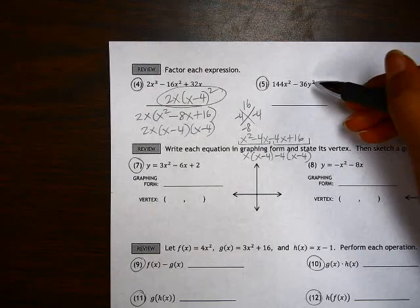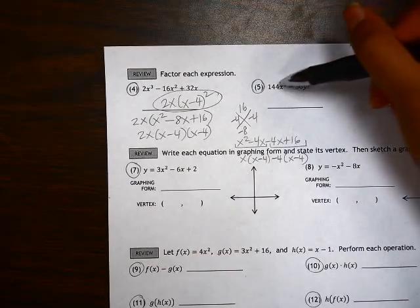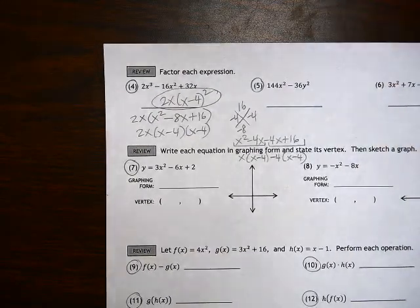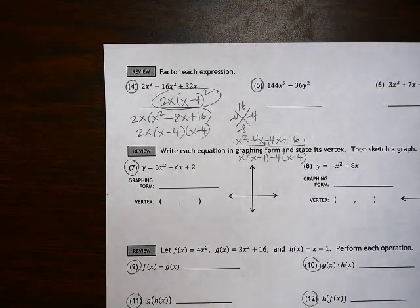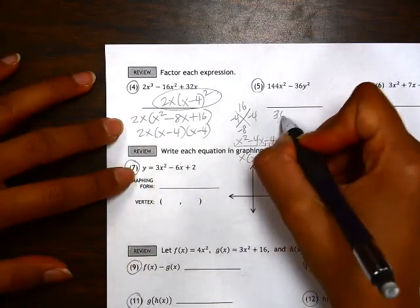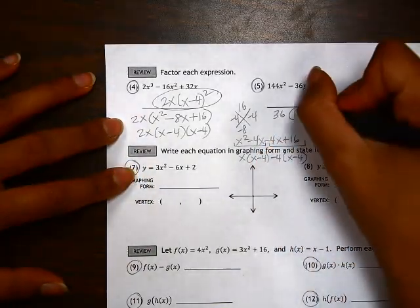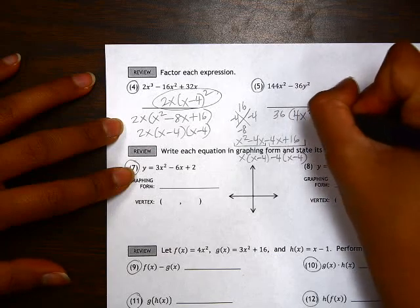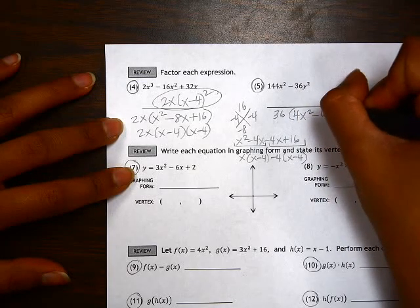Looking at number 5, we first should check if there's anything in common here. The common factor here is 36, so we're going to take that out. And then we're left with 4x squared minus 1y squared.